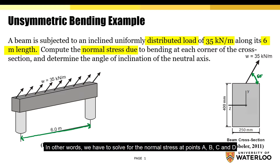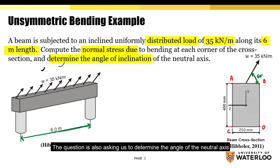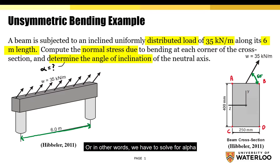The problem is asking us to determine the normal stress due to bending at each corner of the cross section — in other words, we have to solve for the normal stress at points A, B, C, and D. The question is also asking us to determine the angle of the neutral axis, or in other words, we have to solve for alpha.